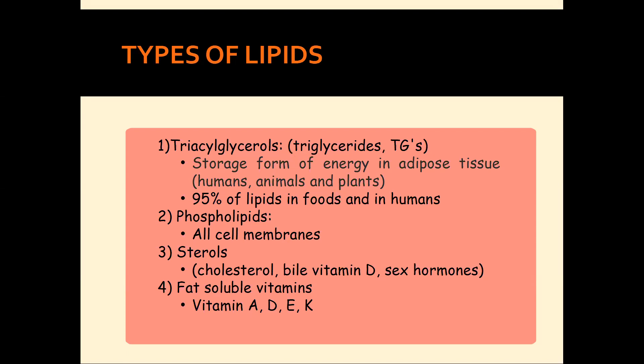There are four classes of lipids: triglycerides (also called triacylglycerols), phospholipids, sterols, and fat-soluble vitamins. When you think of fat, you're essentially thinking of triglycerides, because all the fat you see in your foods comes from triglycerides. A bottle of corn oil, a bottle of olive oil — pure triglycerides. A stick of butter, beef fat, or chicken fat — again, billions of triglycerides. The fat stored in adipose tissue cells are also triglyceride molecules. In fact, 95% of all lipids found in food are triglycerides.